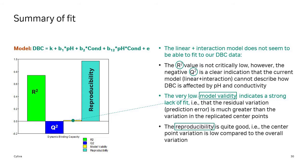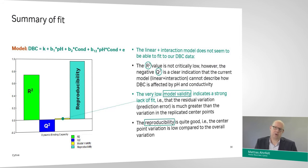So, what we see here on the summary of fit graph is first off the R² bar. That's the standard R² regression statistics that tells us how much of the variation in our response, the binding capacity, can the polynomial fit to, how well can we fit our model to the data we have. So, the model can describe around 75% or so in terms of R², which is not extremely high, but it's not very bad either. However, the Q² bar, the second one, the blue one, is negative, which is not a good sign.